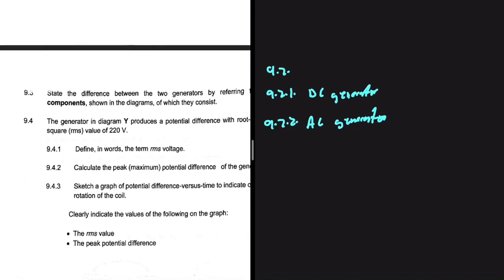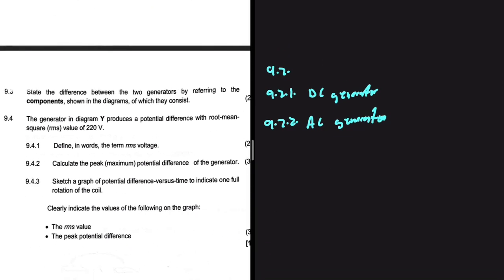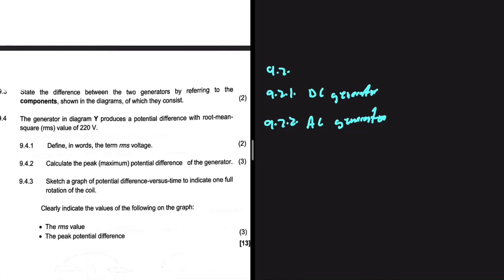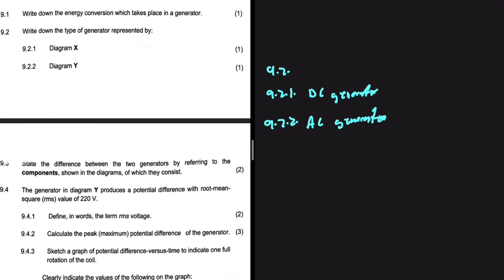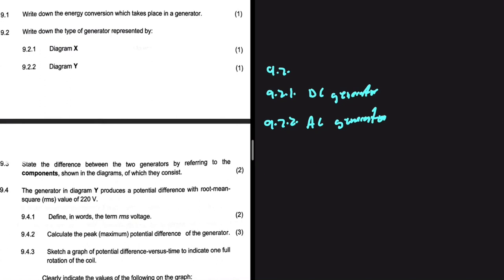Let's look at 9.3: we're supposed to state the difference between the two generators by referring to the components shown in the diagram of which they consist. I mean, this is question 9.2, really, because how are you able to tell that diagram X is a DC generator and how are you able to tell that diagram Y is an AC generator?